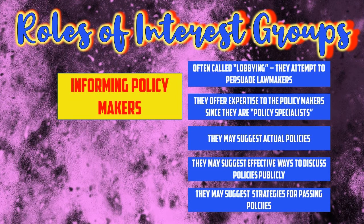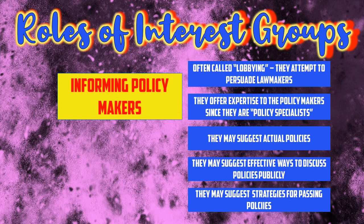Beyond informing the public, interest groups also play a major role in informing the policymakers themselves. This is what we call lobbying — when they're trying to persuade or influence the decisions of lawmakers. Interest groups are the policy specialists, so they provide information to the policy generalists: the lawmakers, congressmen, presidents, and local government officials. They share their expertise, make suggestions about policies they want to see, and may even suggest effective strategies for passing those policies.